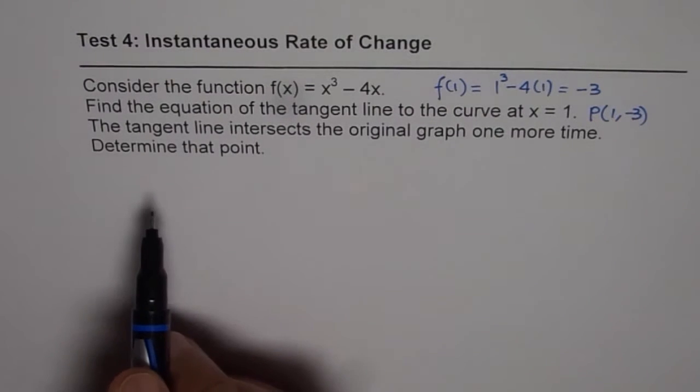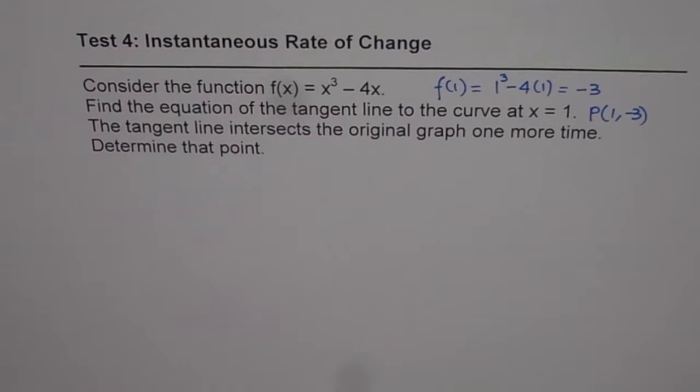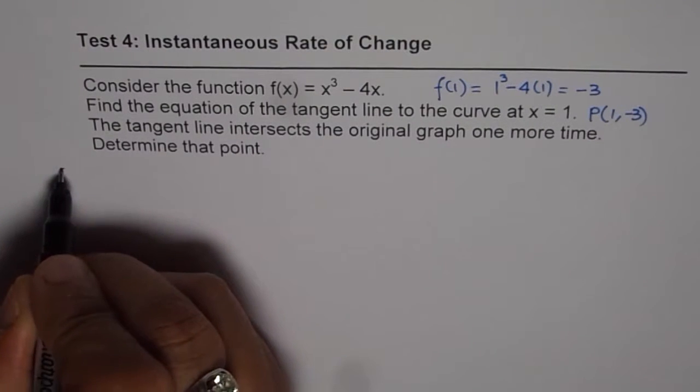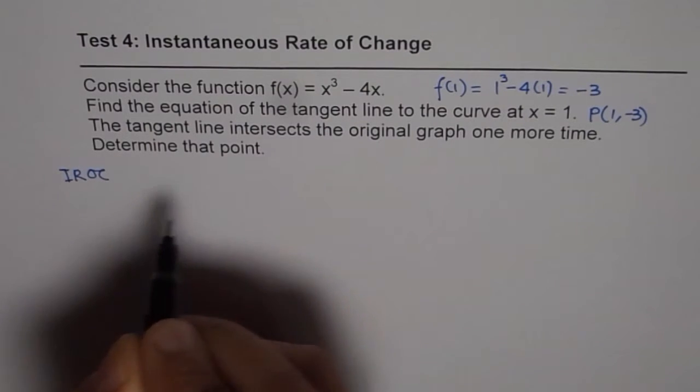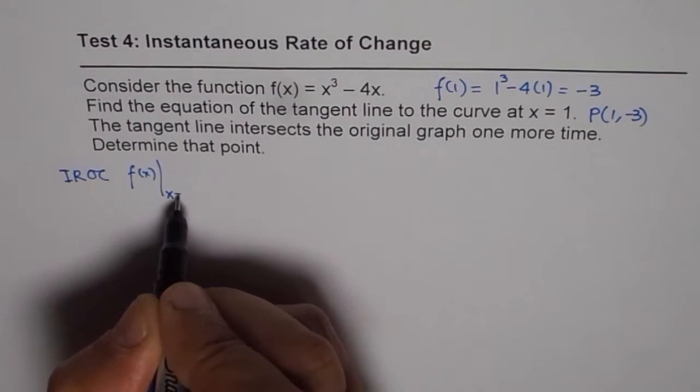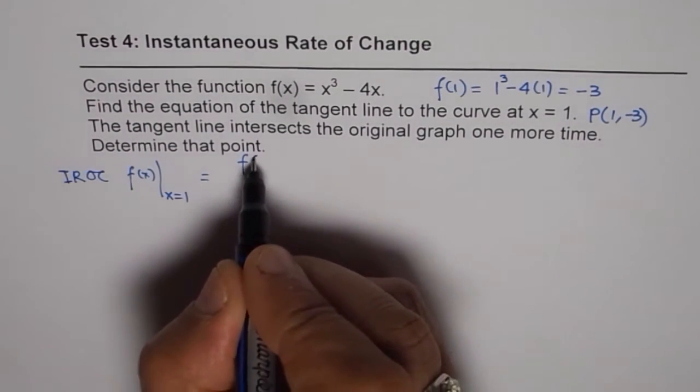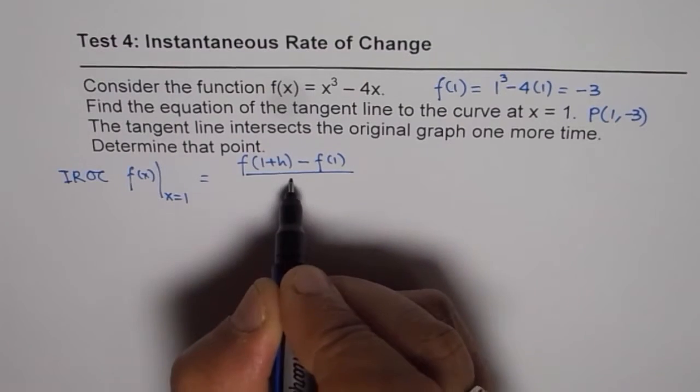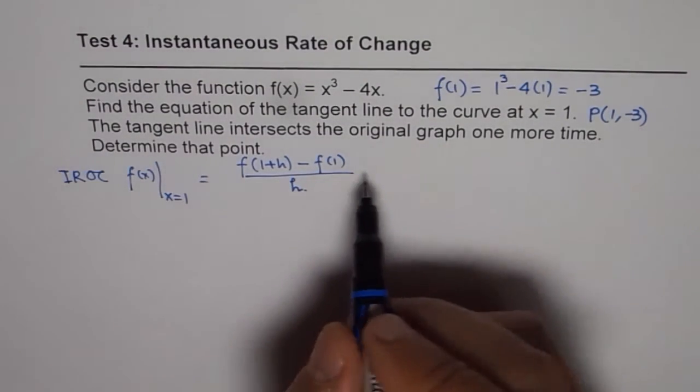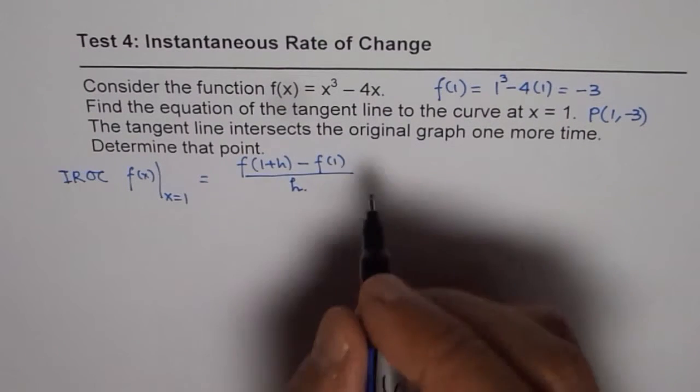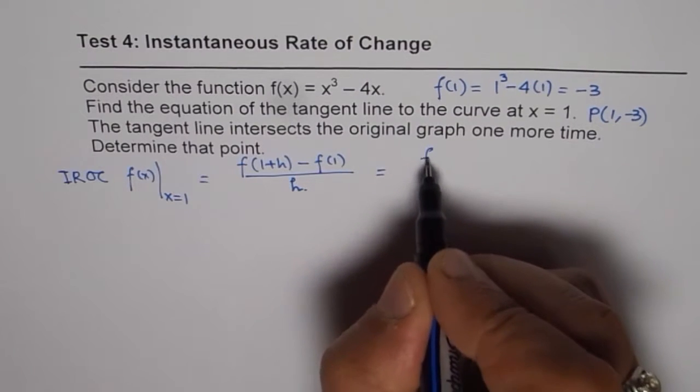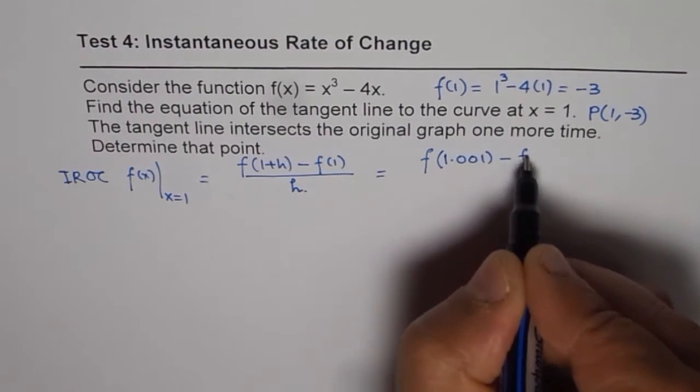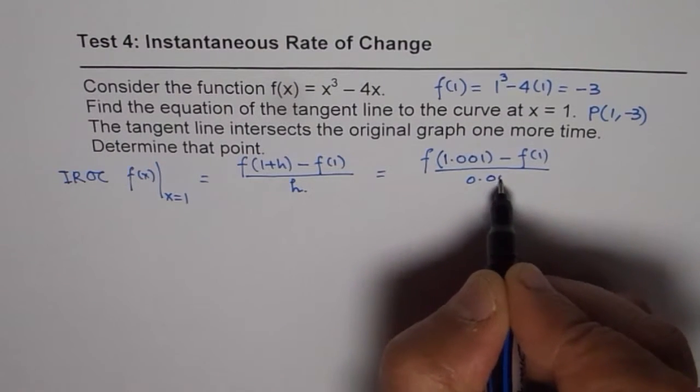Now, how to find slope of this line? To find slope, we need to find instantaneous rate of change at x equals 1. So, let's find instantaneous rate of change of the function f(x) at x equals 1. Now, that should be f(1+h) minus f(1) divided by h. We can select a point very close. Let's say h is 0.001. So, in that case, we can find the value of the function at 1.001 minus f(1) divided by 0.001.